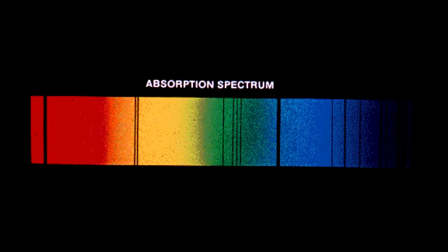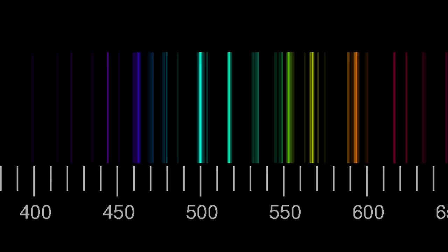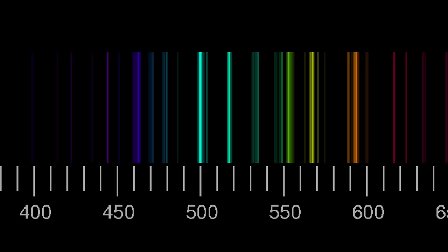These dark lines, now famously known as Fraunhofer lines, appeared as gaps or bands amidst the vibrant colors of the spectrum. Each of these dark lines represented the absence of specific wavelengths of light. Fraunhofer carefully catalogued and mapped these lines, assigning them letters. These spectral lines, unique to each element, served as a celestial fingerprint, allowing scientists to identify the composition of distant stars and galaxies.